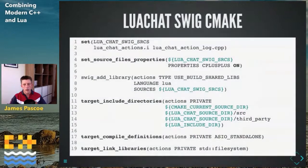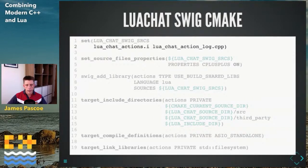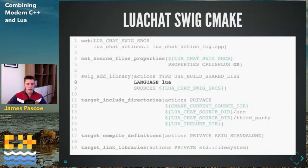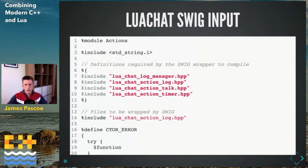SWIG integrates really well with CMake — from Lua Chat, that's basically all there is to it. You have an input file — SWIG has its own input file syntax — and you specify the language you want. Here I'm saying Lua, but the nice thing about this architecture is that if you wanted bindings in both Lua and Python, you'd just add another .i file and generate Python bindings as well. You can use Lua for deployment and Python to drive your actions from a CI test bench — all from the same source.